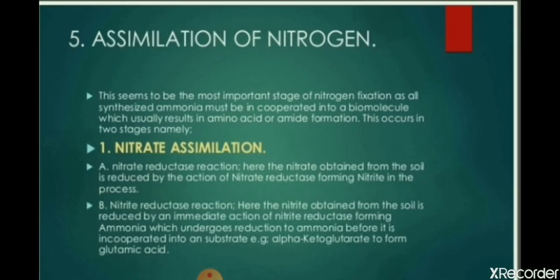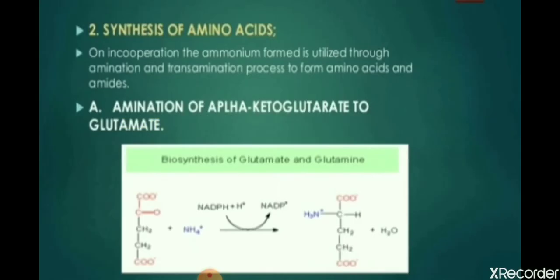Next is assimilation of nitrogen. Nitrogen assimilation is the formation of organic nitrogen compounds like amino acids from inorganic nitrogen compounds present in the environment. It completes in two steps. First is nitrate assimilation, in which the nitrate obtained from the soil is reduced by the action of nitrate reductase forming nitrite. The nitrite is then reduced by nitrite reductase forming ammonia.